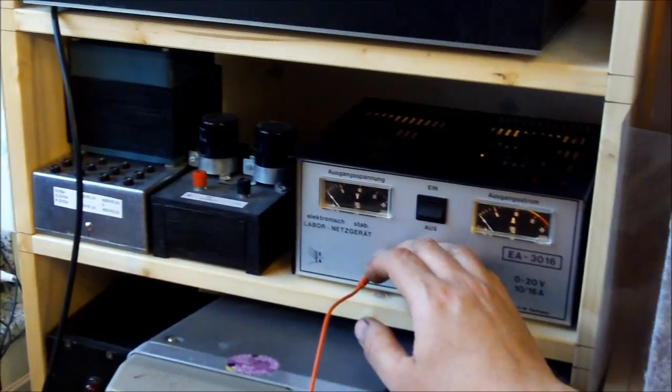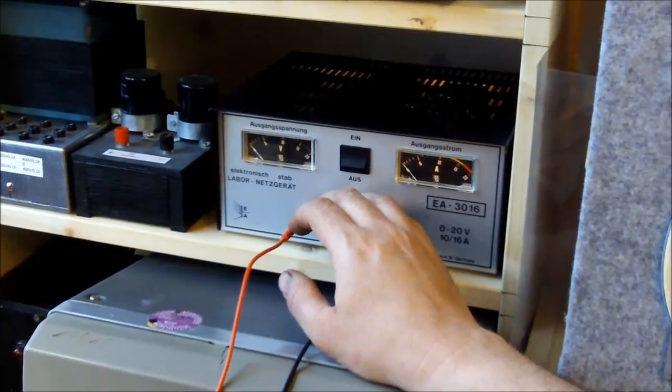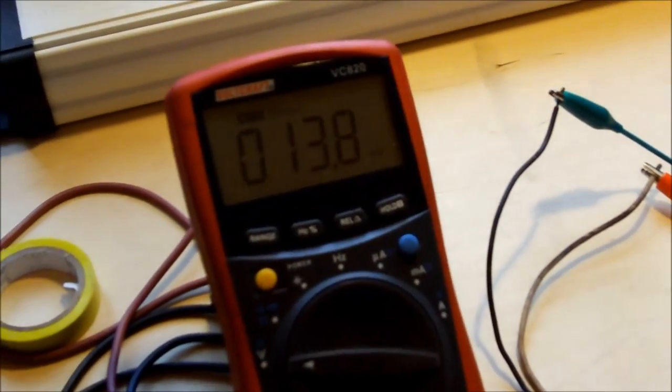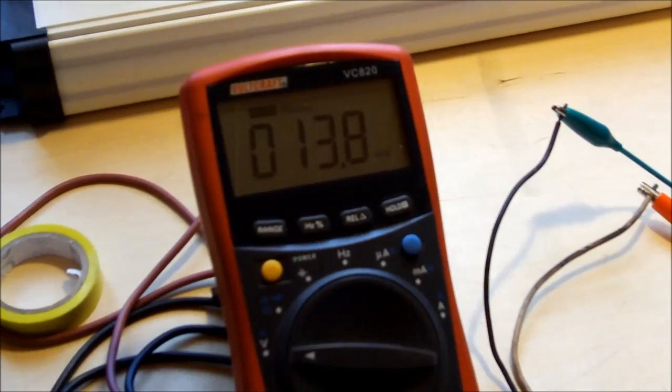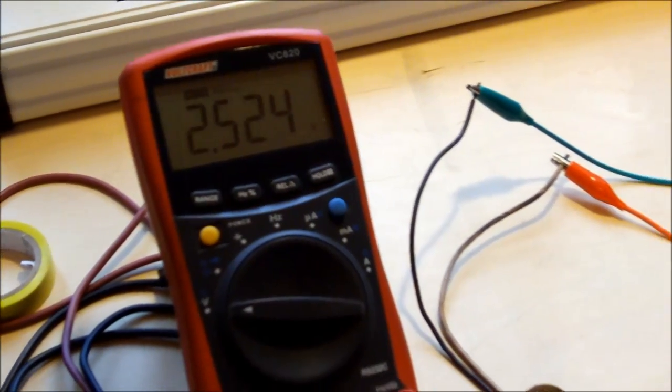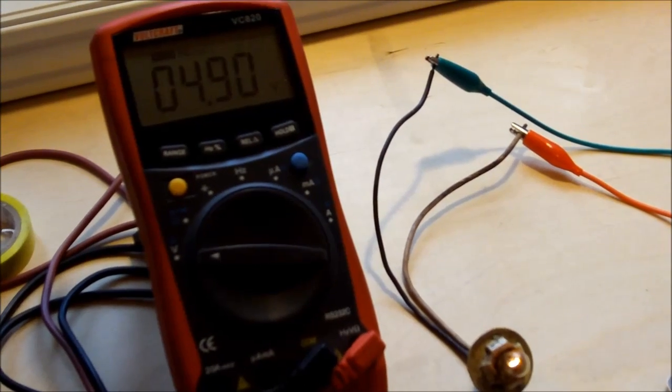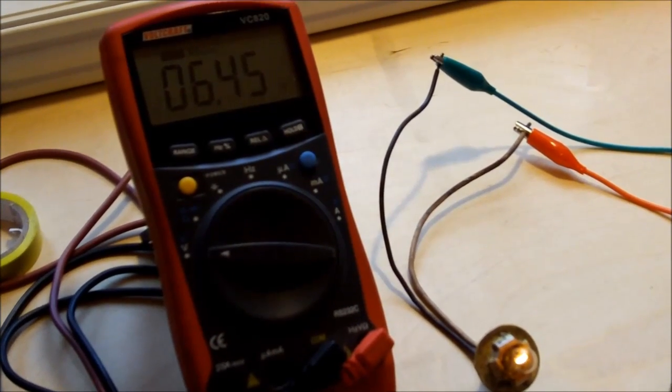Now I'm going to increase the voltage from 0 up to 15 volts. You will see this here on the display of the voltmeter. So what happens now? The bulb starts to glow.